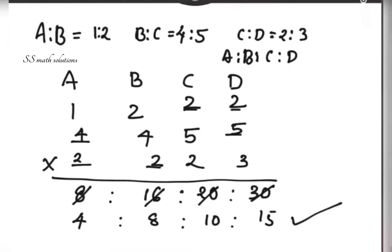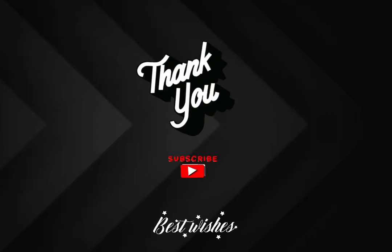So the simplest form for the ratios a is to b is to c is to d — from 1 is to 2, 4 is to 5, 2 is to 3 — is 4 is to 8 is to 10 is to 15. This is a very important section for every competitive examination. Hope you got it. Thank you for watching, please subscribe for more videos.